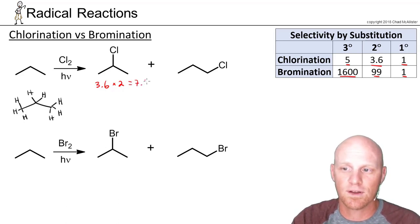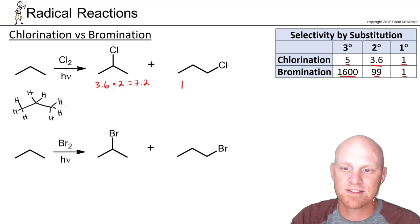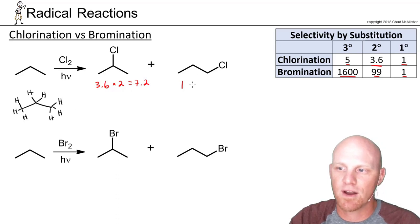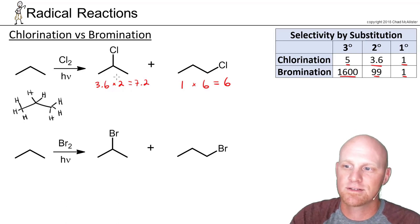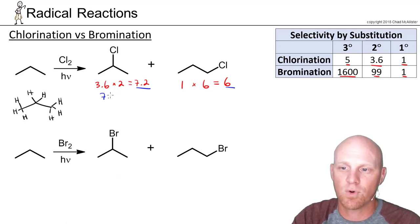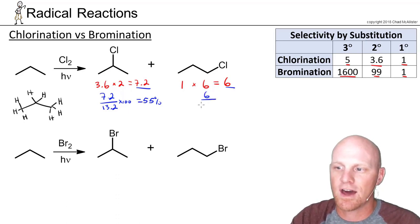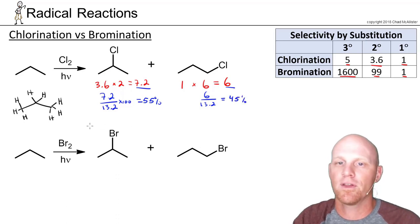For the secondary product, that gives 3.6 × 2 = 7.2. For the primary product, the selectivity is 1, but there are six hydrogens that all lead to that product, so that's 6. Adding the two together gives 13.2. The odds of getting the secondary product are 7.2 out of 13.2 — multiply by 100 and that's where the 55% number from the last slide came from. For the primary product, it's 6 out of 13.2, which gives the 45% number.